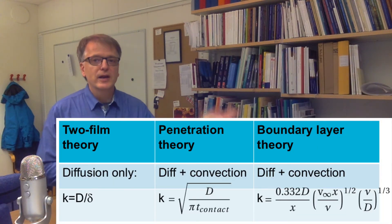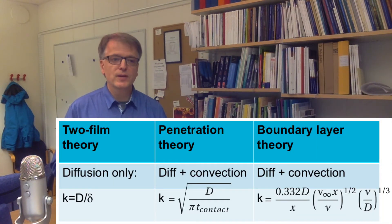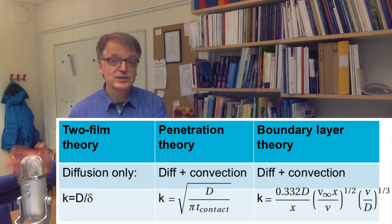These are the equations we use for the two-film theory, the penetration theory, and the boundary layer theory—how the diffusivity relates to the mass transfer coefficient.